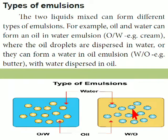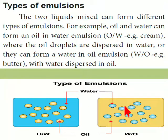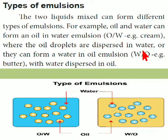The types of emulsions. We have two types of emulsions. Two liquids mixed can form different types of emulsion: oil in water and water in oil emulsion. In the picture, the blue shade is water and the yellow shade is oil. In oil in water emulsion, the oil droplets are dispersed in water — example: cream. In water in oil emulsion, water droplets are dispersed in oil — example: butter.